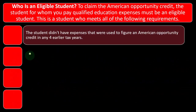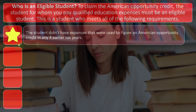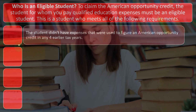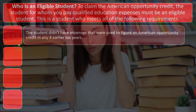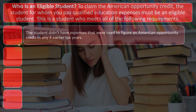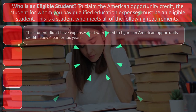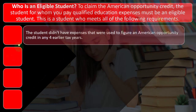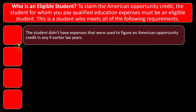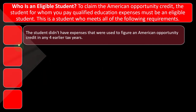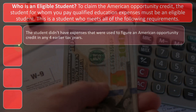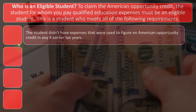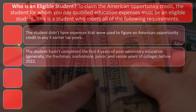First condition: the student didn't have expenses used to figure an American Opportunity Credit in any four earlier tax years. That's for the student, who could be claiming the credit on their parents' return as a dependent, or on their own return if not a dependent, or some combination of the two within the four-year period. No matter where the credit was claimed, it's tied to that student's expenses, and you only have four years to claim the American Opportunity Credit.